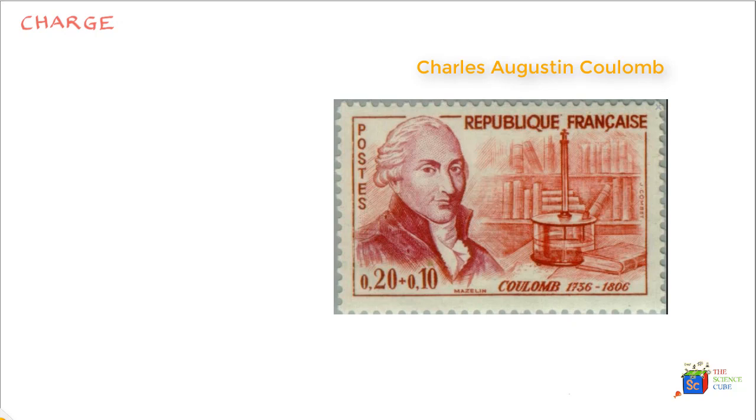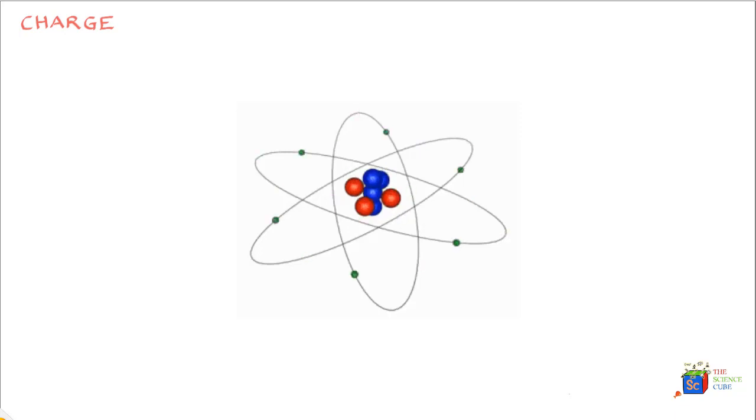Before we go on and learn Coulomb's Law, let us try to quickly understand the structure of an atom and how an atom gains or loses a charge. An atom typically has a nucleus that has positively charged protons and uncharged neutrons, and the space around the nucleus has a cloud of electrons that are negatively charged and are moving around this nucleus.